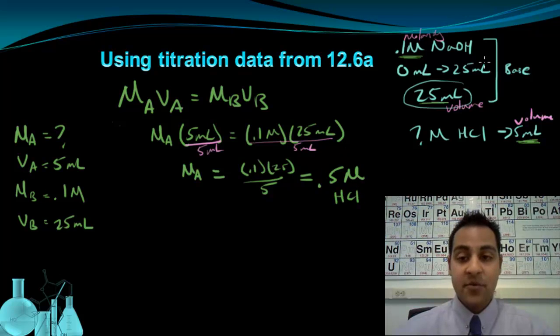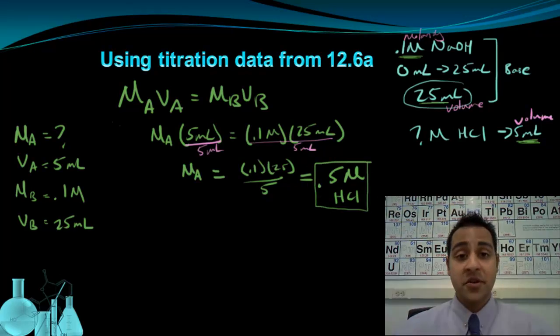And that's a concentration of the acid. So this data that we use in the titration essentially let us figure out that the concentration of the acid, HCl, was 0.5 molar. Let's take a look at another example to see how to use this equation.